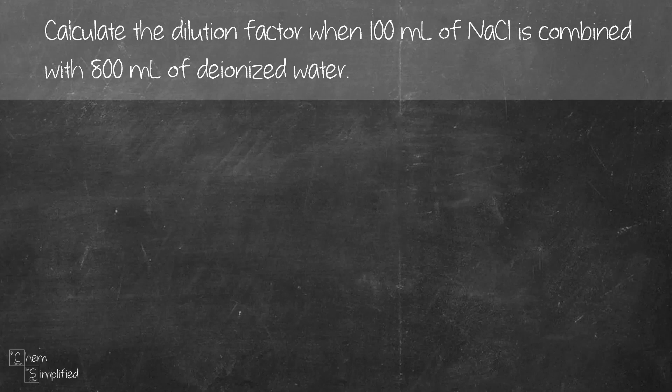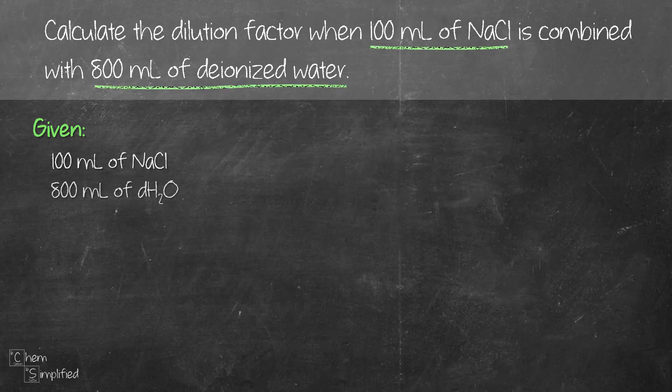This question is asking us to calculate the dilution factor when 100 mL of NaCl is combined with 800 mL of deionized water. The question is giving us a couple of information. We have 100 mL of NaCl and we also have 800 mL of deionized water.